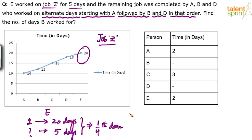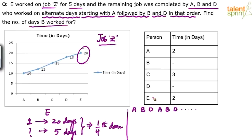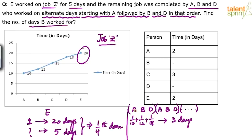1/4 is done, so 3/4 is remaining — these are mental calculations, you don't need to write any step. E worked for 5 days so 1/4 is done; 3/4 is remaining. This 3/4 will be done by A, B, and D working in the order A, B, D. Every set of three days the same amount of work gets completed. A's capacity is 1/10, B's is 1/12, D's is 1/18. In three days, the work done is 1/10 plus 1/12 plus 1/18.